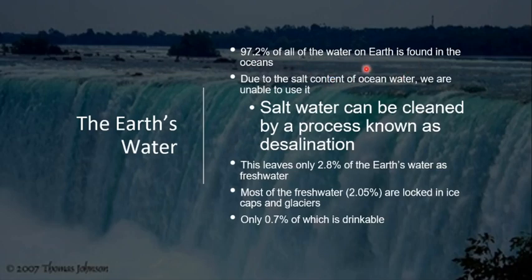97.2% of all the water found on earth is present in the oceans. Ocean has more salinity, or the salt content in ocean water is high, and therefore it is unable to use. We can clean this salt water by the process known as desalination, that means removal of salt. 2.8% of earth's water is present as fresh water, and out of this 2.8%, 2.05% of fresh water is locked in ice caps and glaciers, and only 0.7% of the water is in drinkable form.